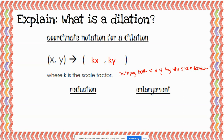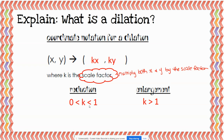You can tell whether you are going to have a reduction or an enlargement based on the scale factor. If you are having a reduction, then your scale factor would be greater than zero but less than one — any number between zero and one. As soon as you get to a number larger than one, that is going to be an enlargement. So any fraction or decimal is a reduction, and any number larger than one is an enlargement.